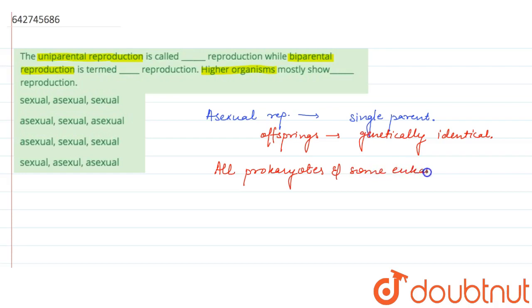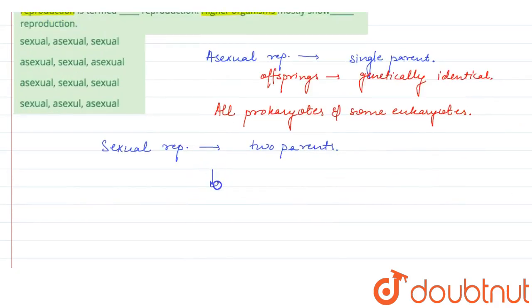After that, the sexual reproduction. Sexual reproduction involves two parents and in sexual reproduction the parents produce certain type of reproductive cells we call them as gametes.